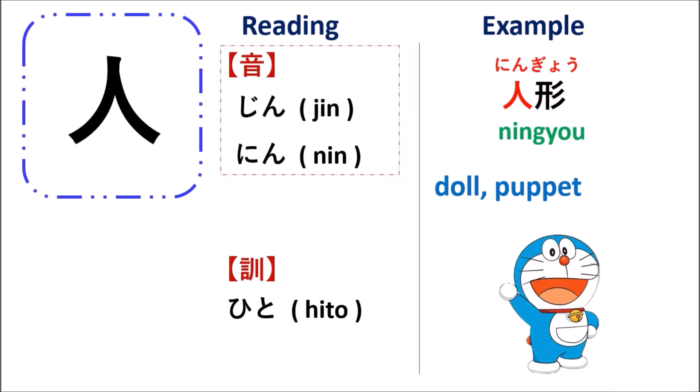The next word is ningyō, which means 'doll' or 'puppet.' The first kanji nin means 'people,' and the second kanji gyō means 'form' or 'shape.' When you see something that has the form of a person but does not have life, that means a doll or puppet. So in this case, ningyō translates to 'doll' or 'puppet.'